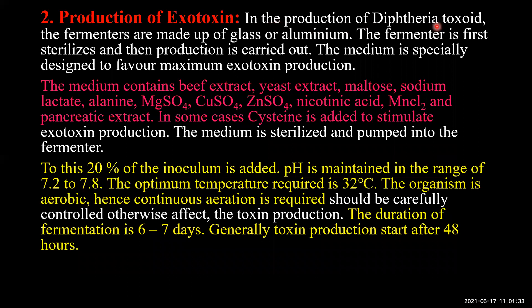For the production of exotoxin, fermenters made of glass or aluminium are used because iron is toxic to the process — steel containers are avoided. The fermenter is first sterilized and then the specially designed production medium is added. The medium contains beef extract, yeast extract, maltose, sodium lactate, alanine, magnesium sulfate, copper sulfate, zinc sulfate, nicotinic acid, manganese chloride, and pancreatic extract. In some cases, cysteine is also added to stimulate exotoxin production.